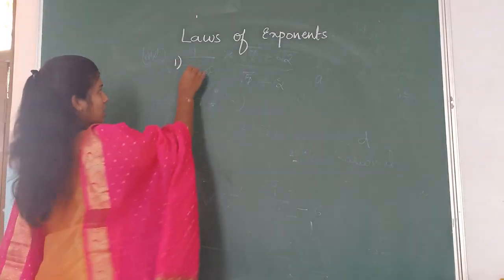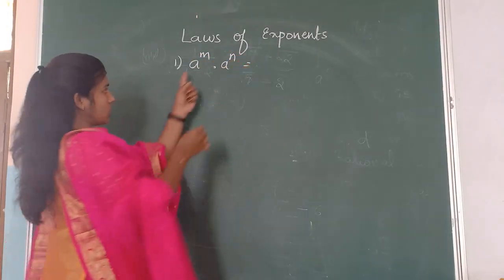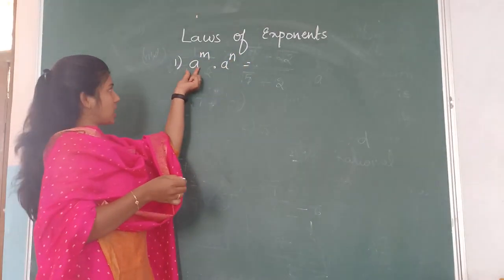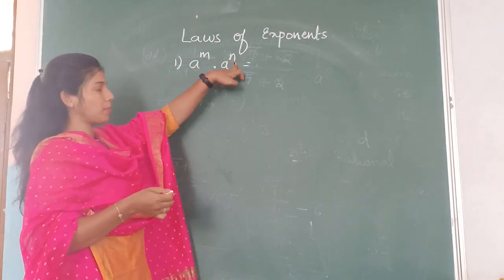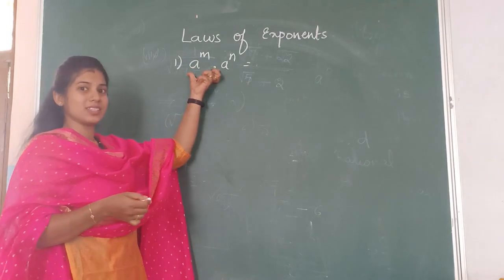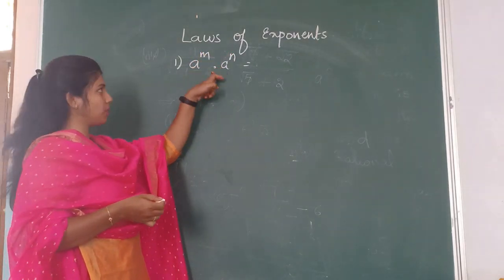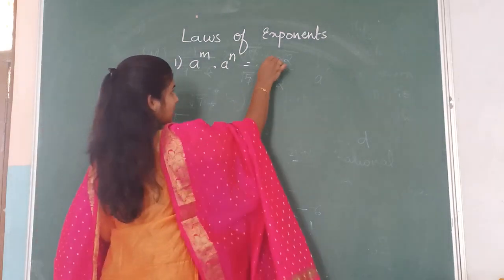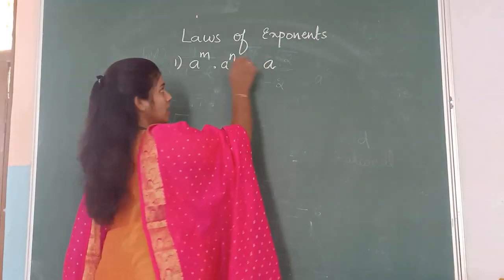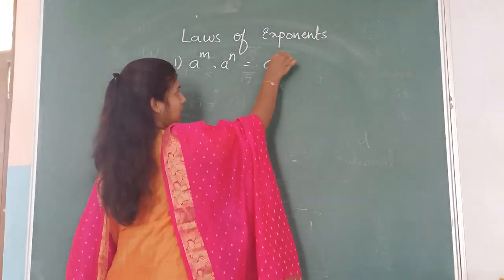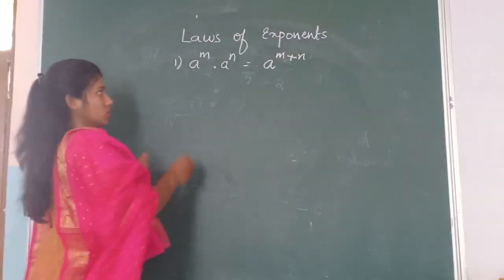Our first law is A raised to M into A raised to N. Here the base is A and the powers are M and N. When your bases are same and powers are different, and in between the two terms a multiplication symbol is there, that time you write the base as same and the powers get added — that is A raised to M plus N.